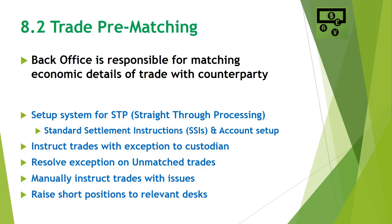Back office teams perform various activities to assist trade prematching. One key activity is setting up the system for STP or straight through processing, where trade details can directly enter from middle office systems into the back office systems and go directly to the custodian. Back office teams are also responsible to instruct trades which are exceptions to the custodian. For example, if a trade for a new counterparty comes into the system, there may be no SSIs or standard settlement instructions set up, so back office teams will manually instruct those trades to reach the custodian before settlement date.